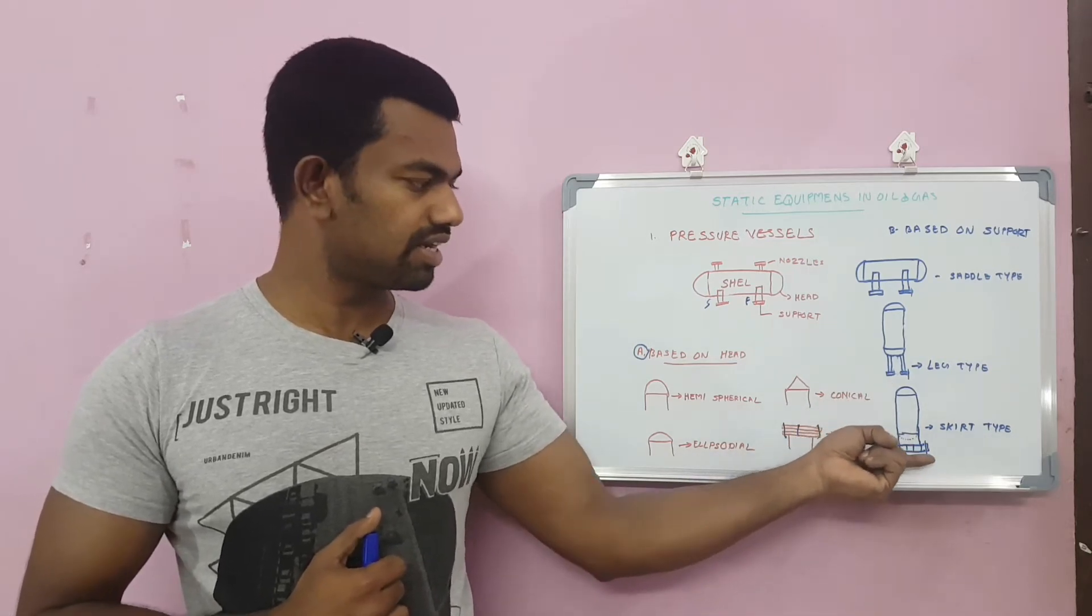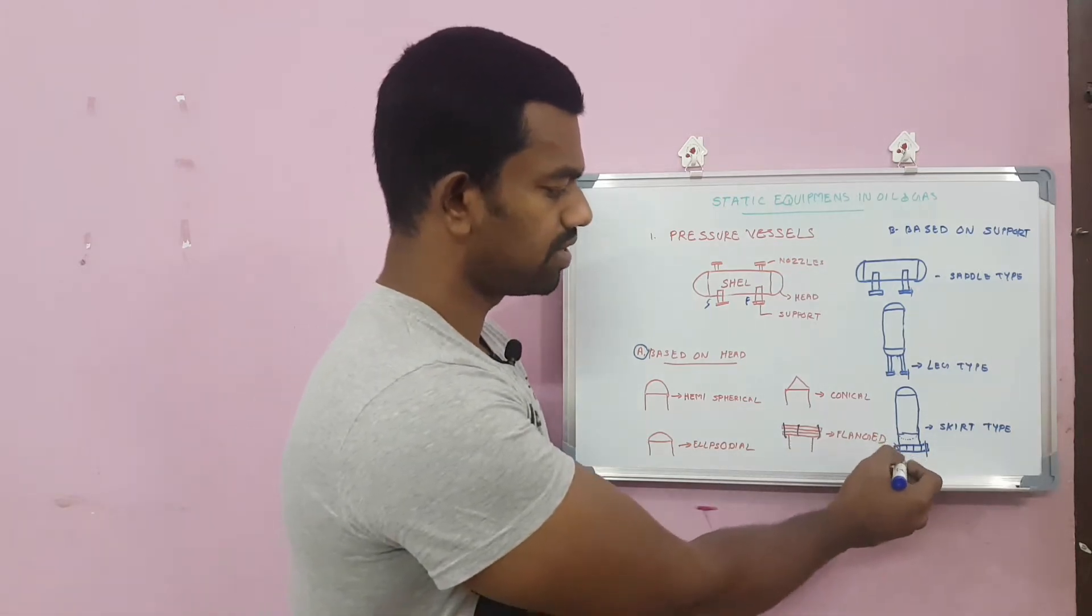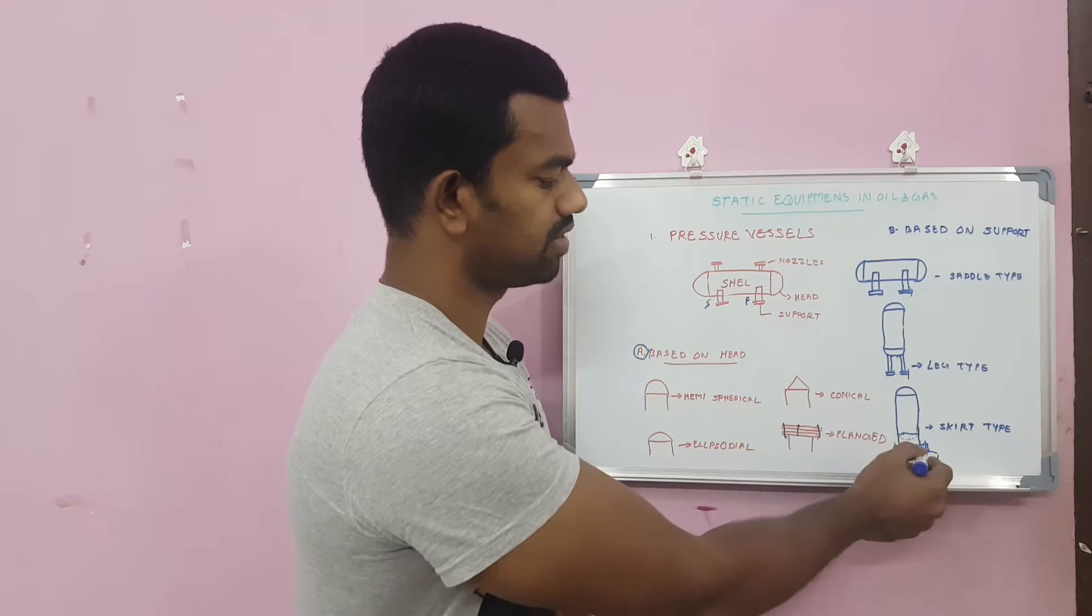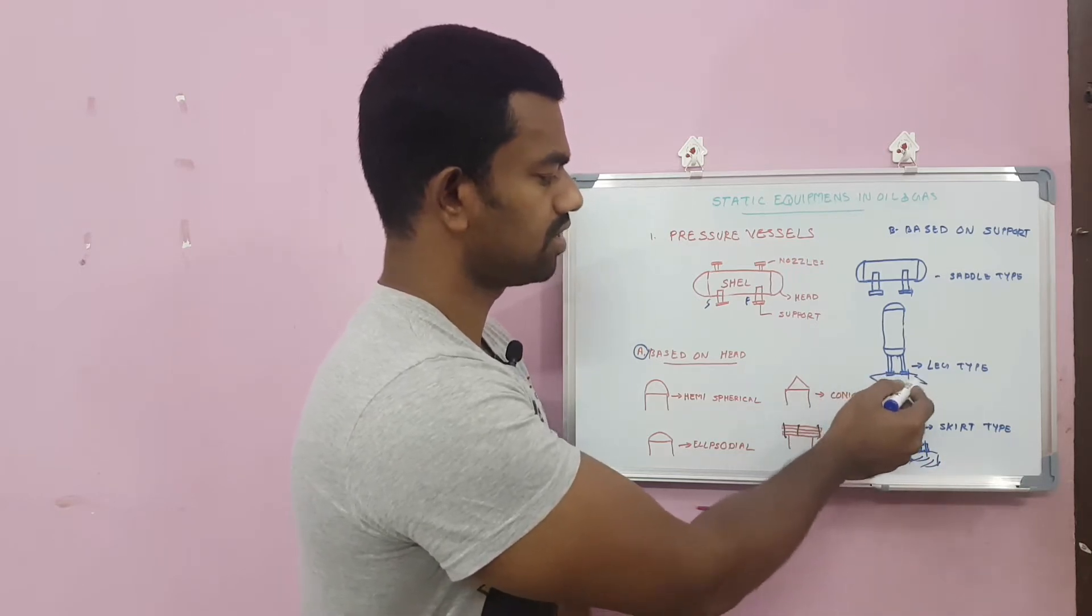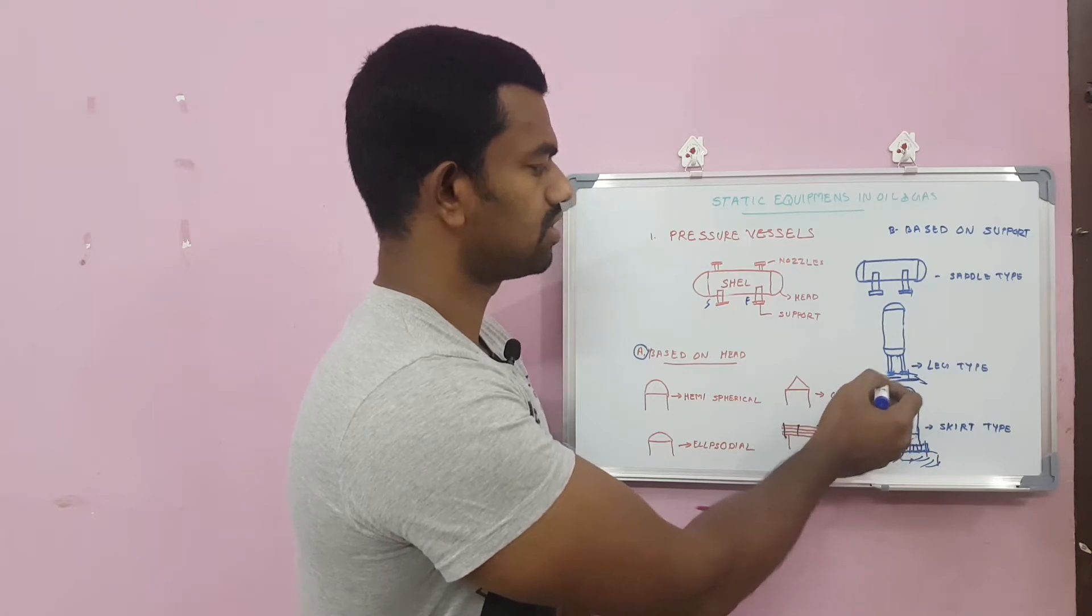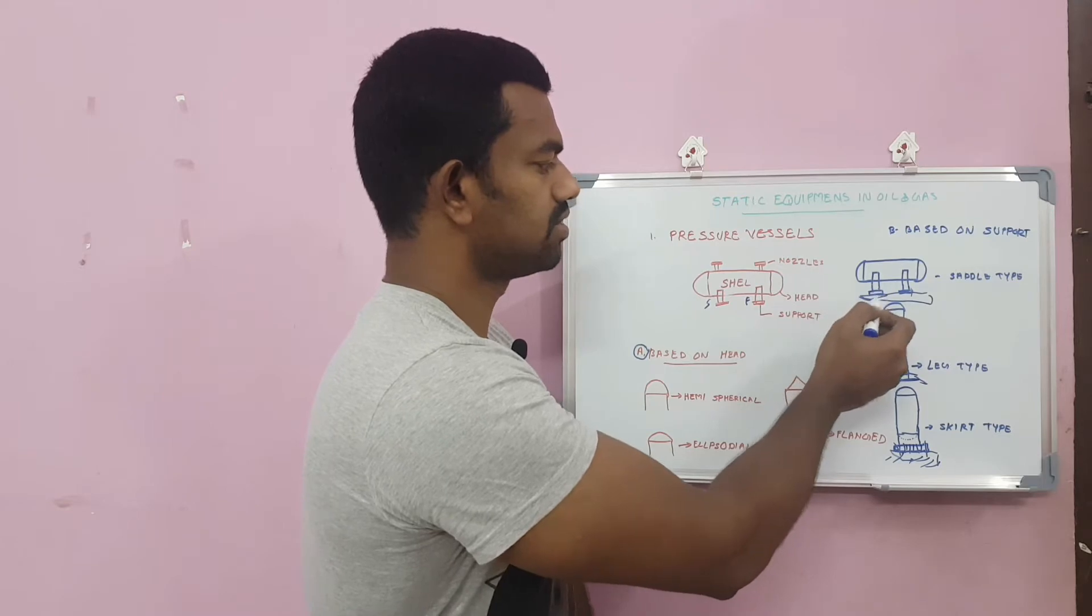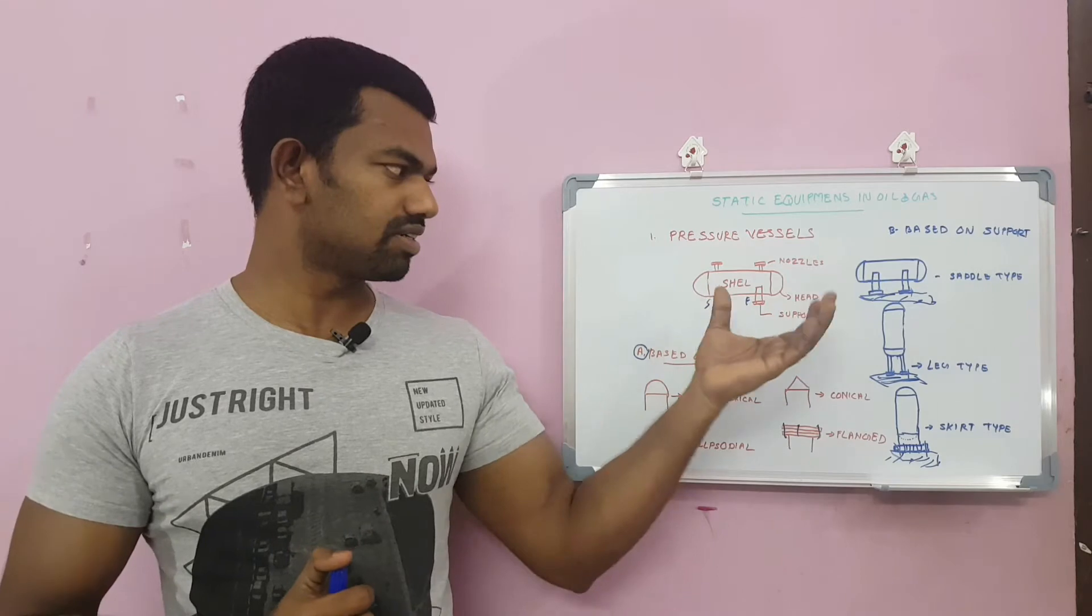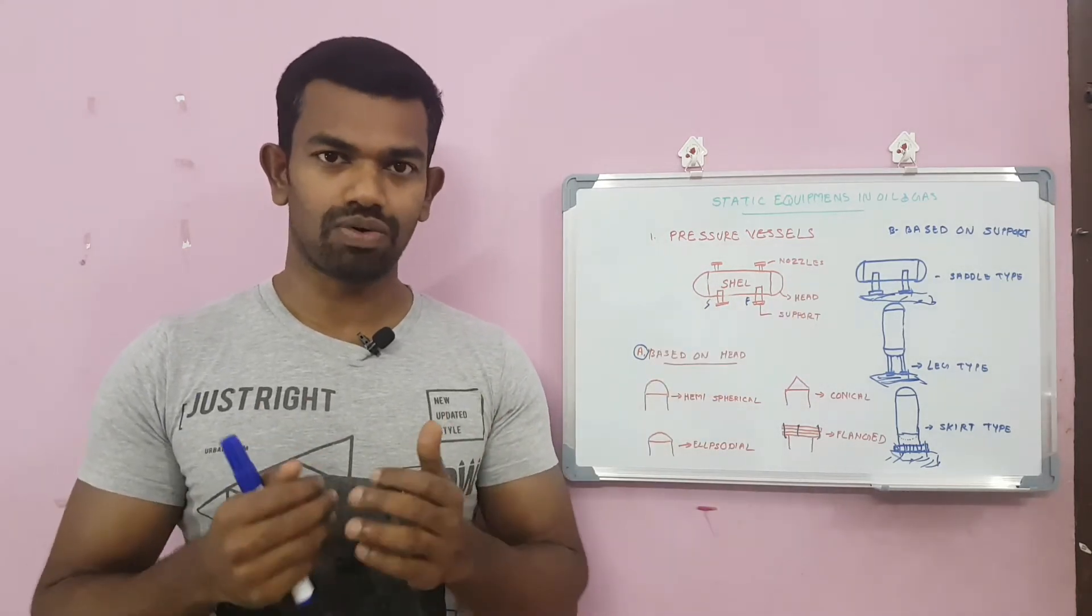The third is skirt type. As the name indicates, here anchor bolts will be installed to the foundation. In this case, this area will be fixed on the foundation. These are the basic types. There are many types but we are considering only the major things.